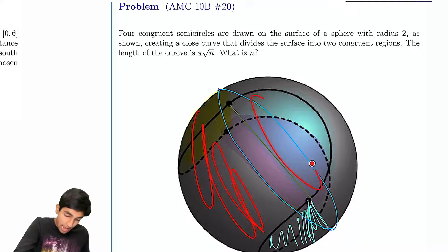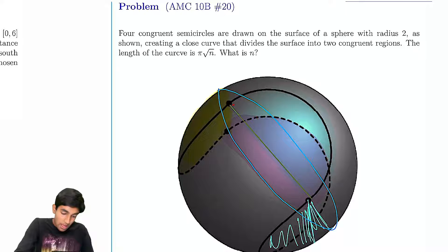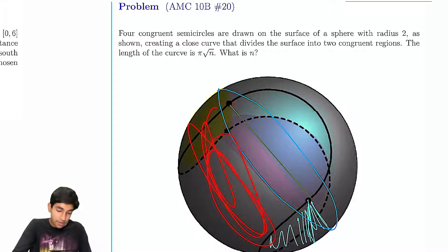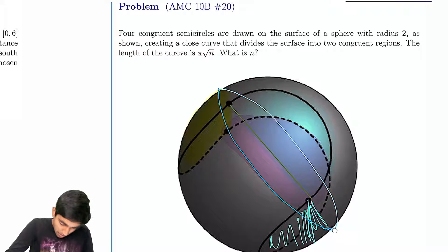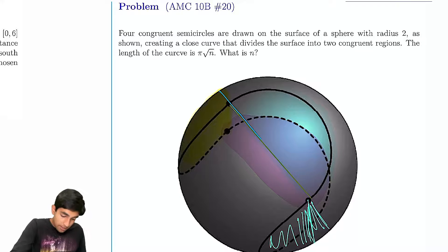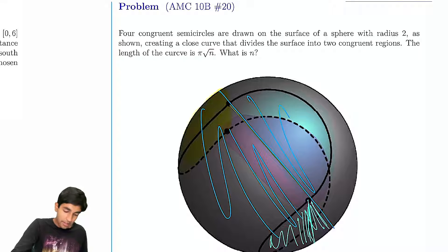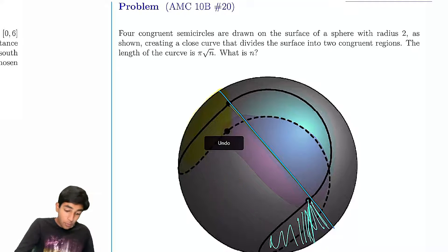Now, because of the fact that this region and this region have equal surface area, because we just moved this region, this piece has the same surface area as the original piece, we can just say this is half of the sphere and this is half of the sphere.